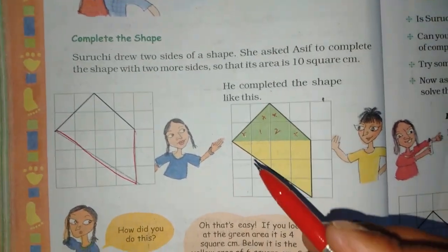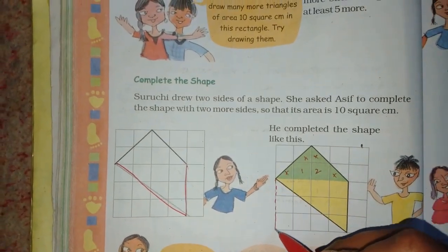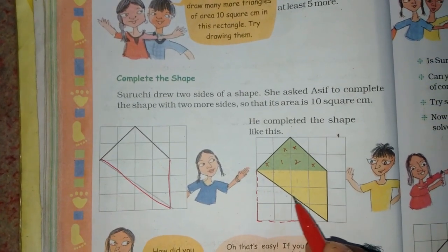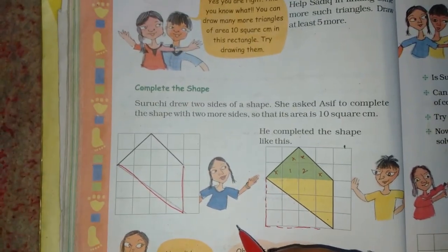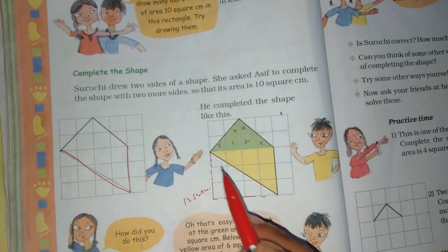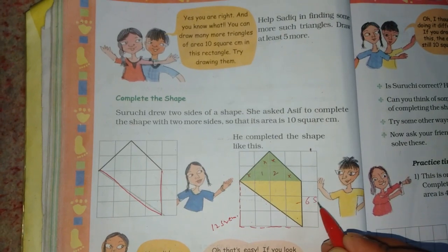Now let's check the other squares. There are 6 more square cm, so he said everything is fine.